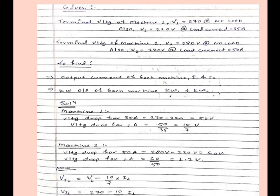Now for machine 2, voltage drop for 50 ampere is equal to 280 volt minus 220 volt equals 60 volt. So voltage drop for 1 ampere equals 60 by 50 equals 1.2 volt. Now VI1 is equal to V1 minus 10 by 7 into I1.